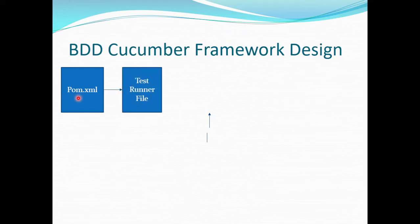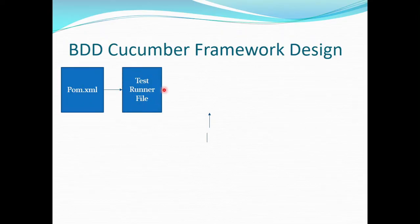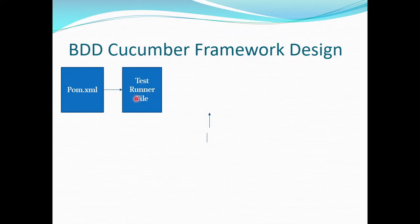Next we have the TestRunner file. The TestRunner is a Java file and it is essentially the main method for a Cucumber project — just as execution starts from the main method in Java, for Cucumber it starts from this TestRunner file. Here we define attributes like tags, features, and steps, specifying which scenarios we want to run.